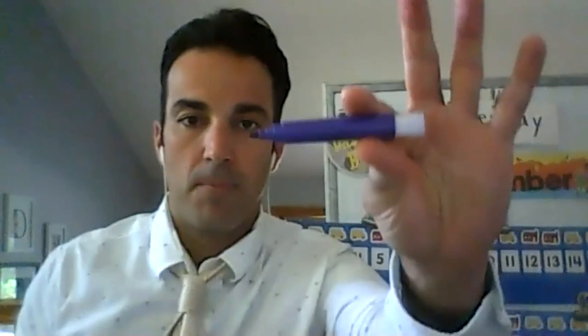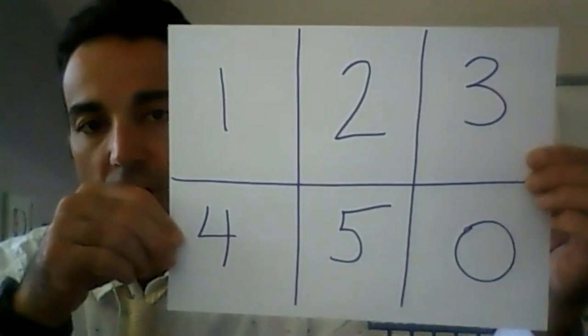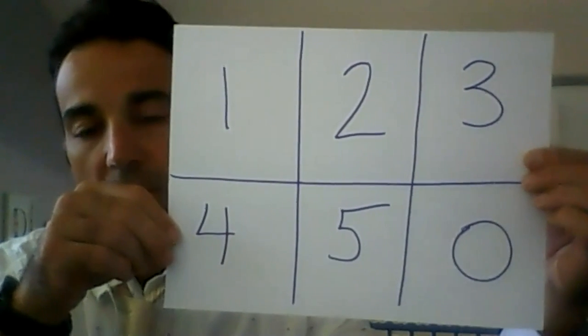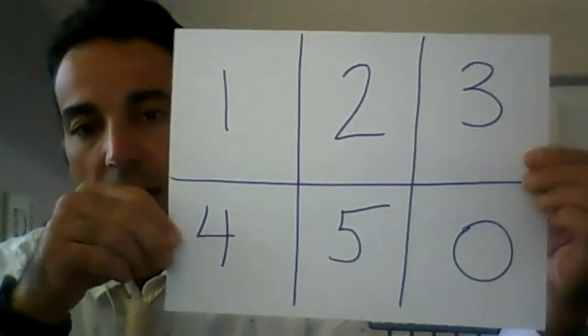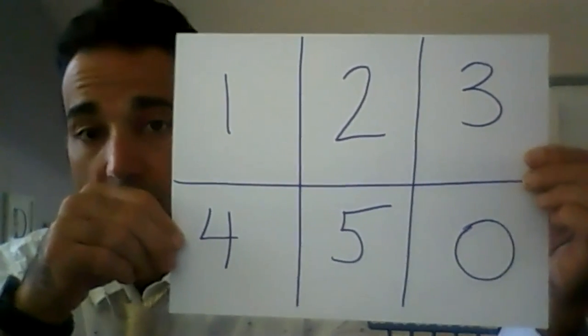Hey guys, welcome back to our class. We're going to be doing our small group math activity. This is for all you guys who missed it — you can watch it and do it along with me. You're going to need a marker, and you're going to need your number board. I made this on a piece of paper and shared it with your parents — you can make this really quick before you start working.